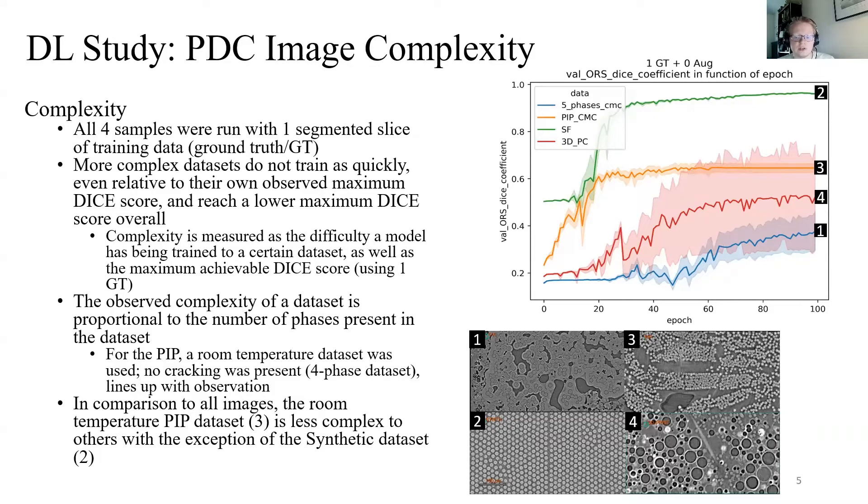We found that in comparison to the other three datasets, the PIP dataset was considered third in terms of complexity. This is most likely due to the fact that a room temperature PIP dataset was used and only four phases being present. This also falls in line with our hypothesis that complexity is measured on the amount of phases present as it falls in between the two phase of the synthetic dataset and the five phase of the 3D-printed composite.